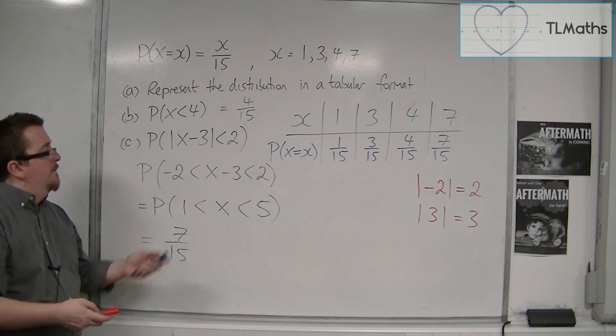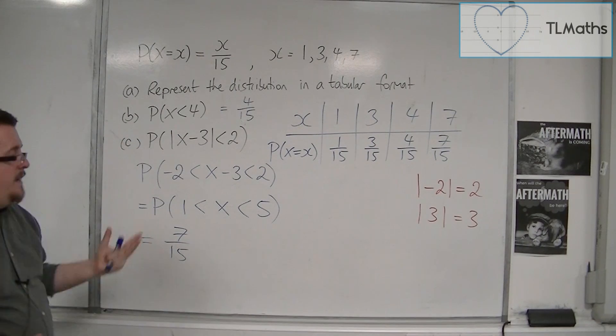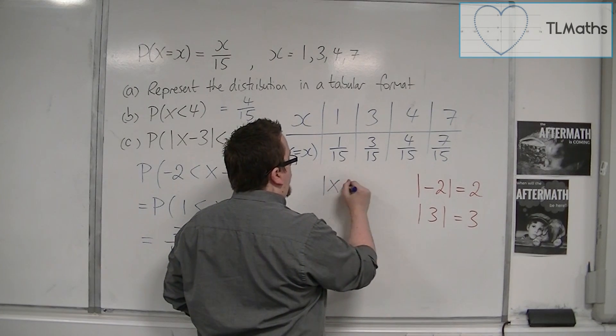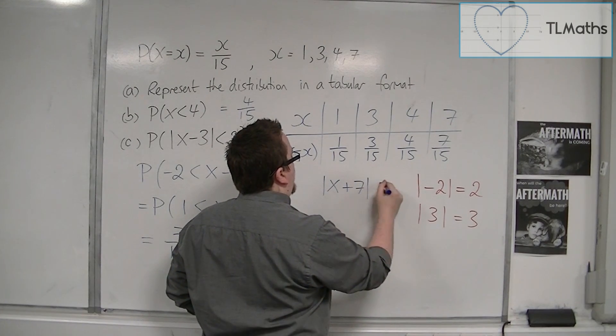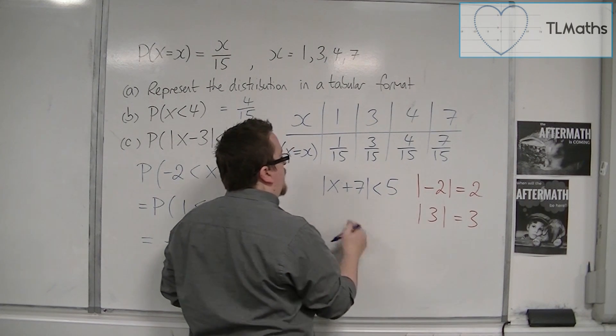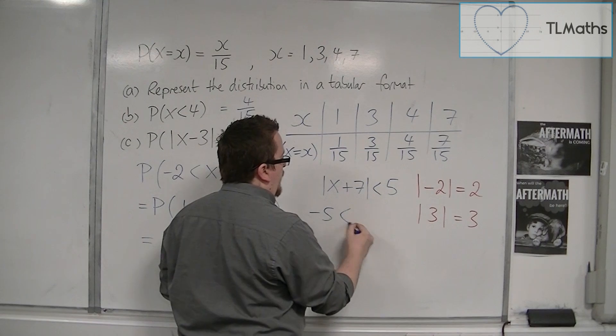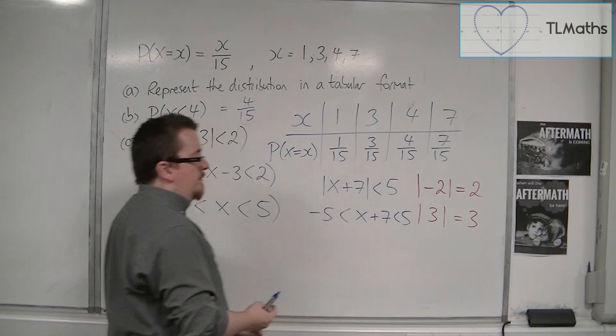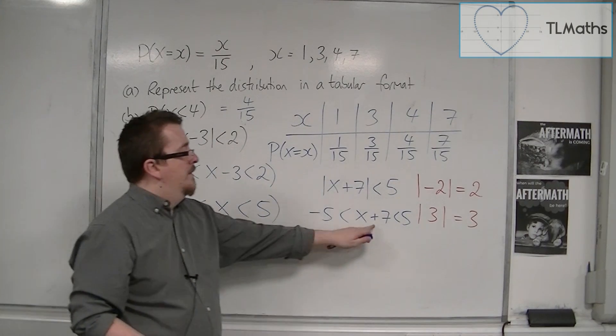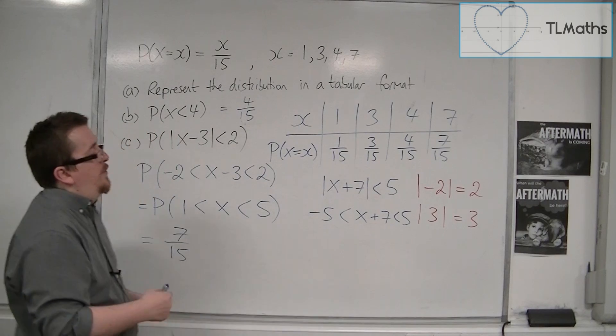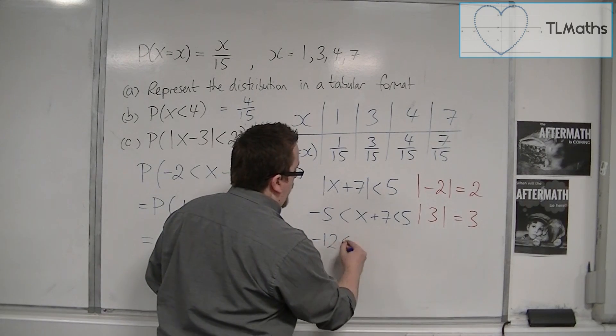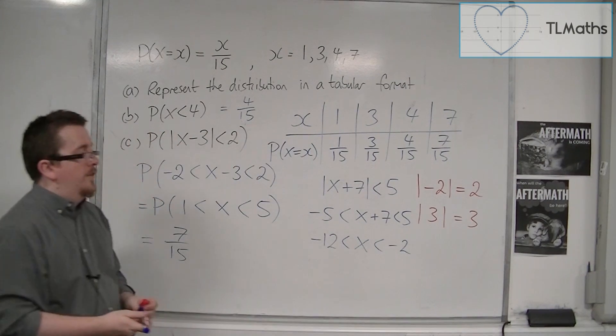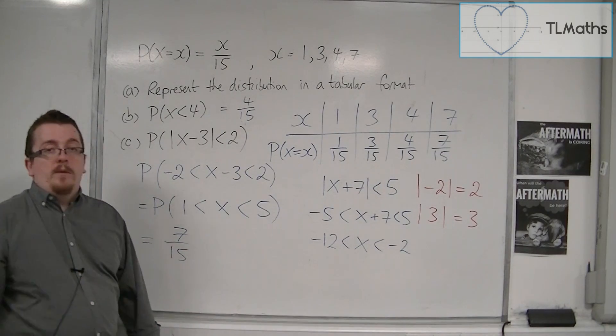So just to reiterate on this, because it is not an easy thing to spot. If I just wrote down another one, like x plus 7 is less than 5, then it is equivalent to say that x plus 7 is between minus 5 and positive 5. And then you could take 7 from each side, and then you would wind up with minus 12 is less than x is less than minus 2. So there is another example of this.